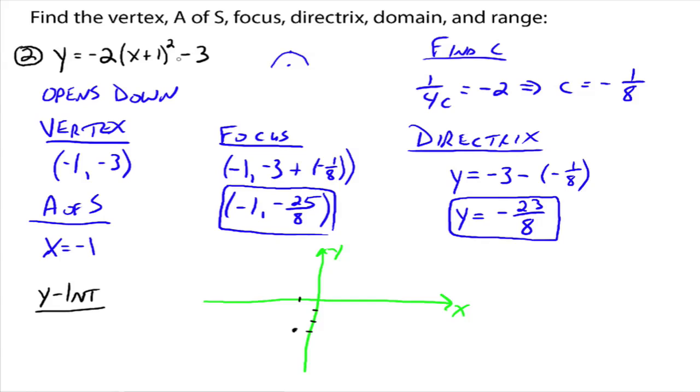To find the y-intercept, we let x be 0. So y equals negative 2 times 1 squared minus 3, which means y is equal to negative 5. So that's the ordered pair 0, negative 5. So 1, 2, 3, 4, 5.